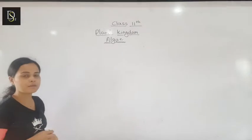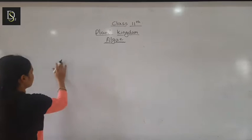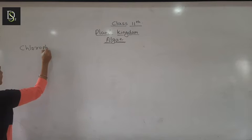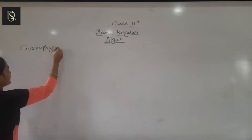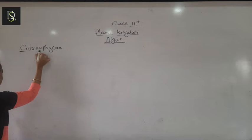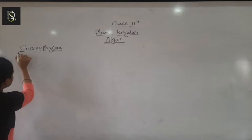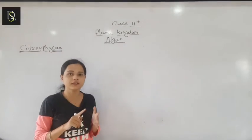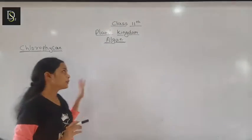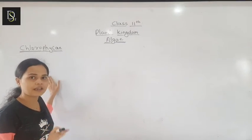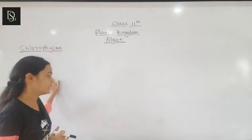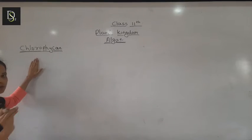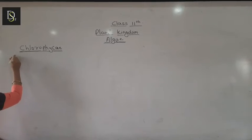In the last lecture we have seen about Chlorophyceae. There are three types of coloured algae — red algae, brown algae, and green algae. According to our classification we have different classes. We have seen green algae, the Chlorophyceae class.